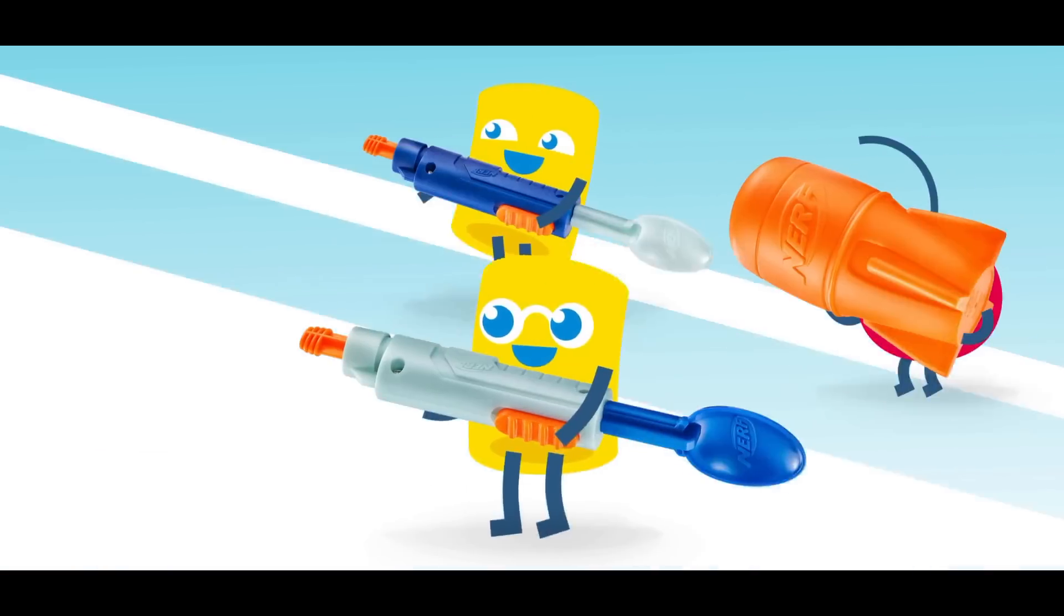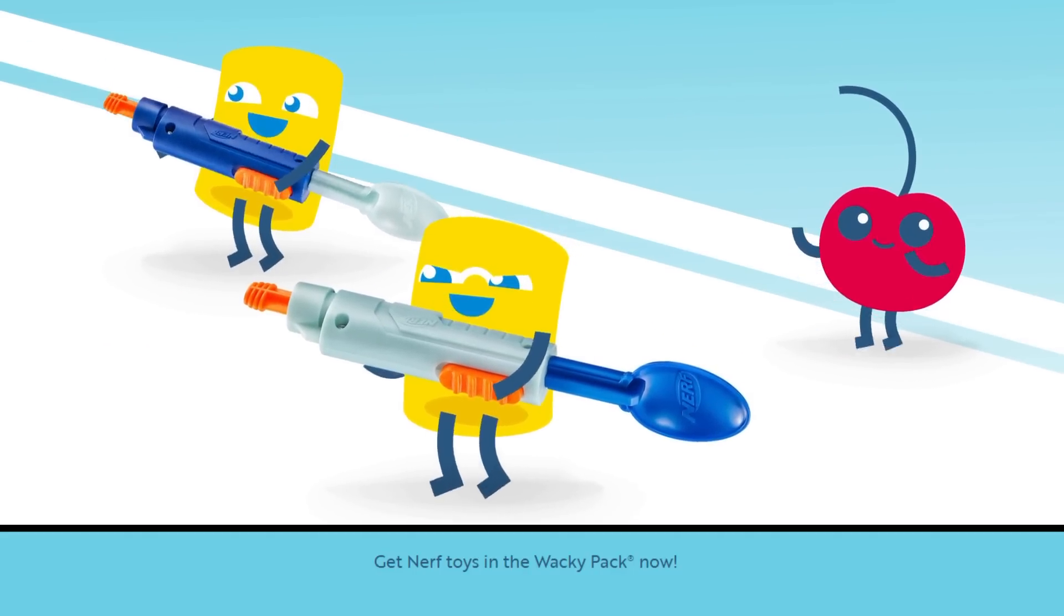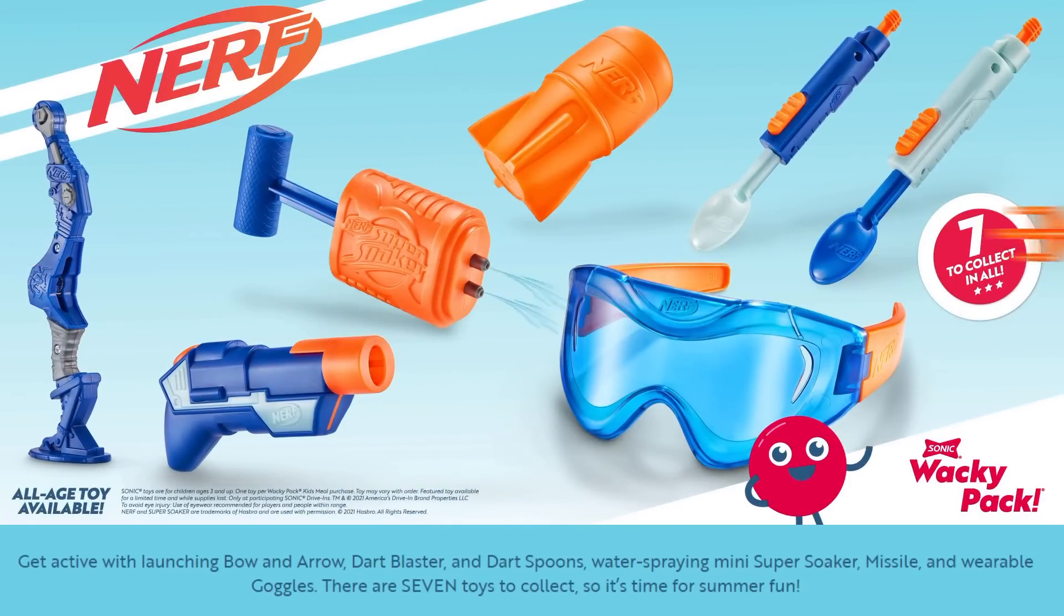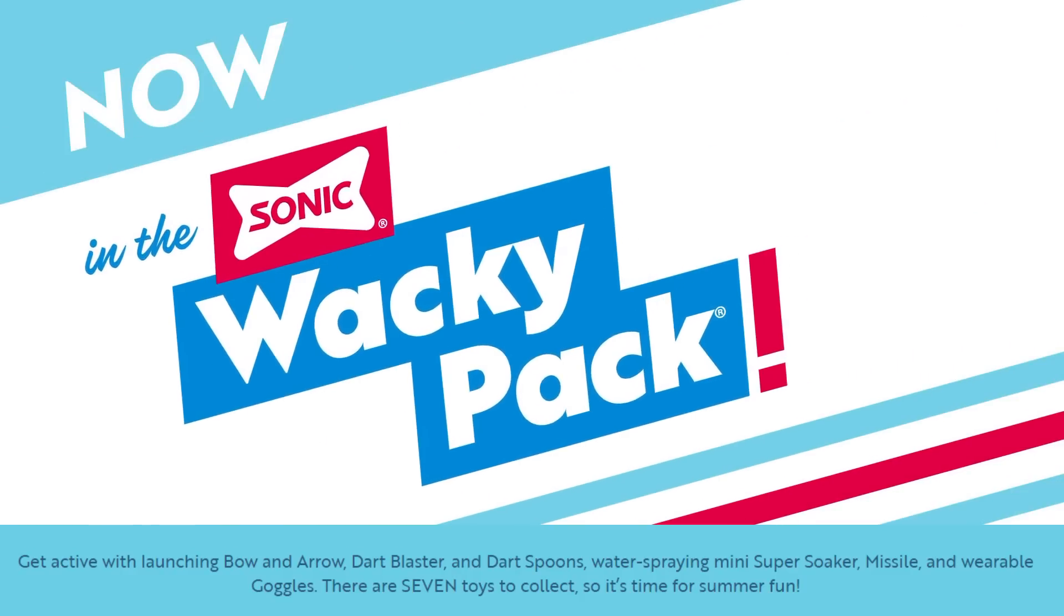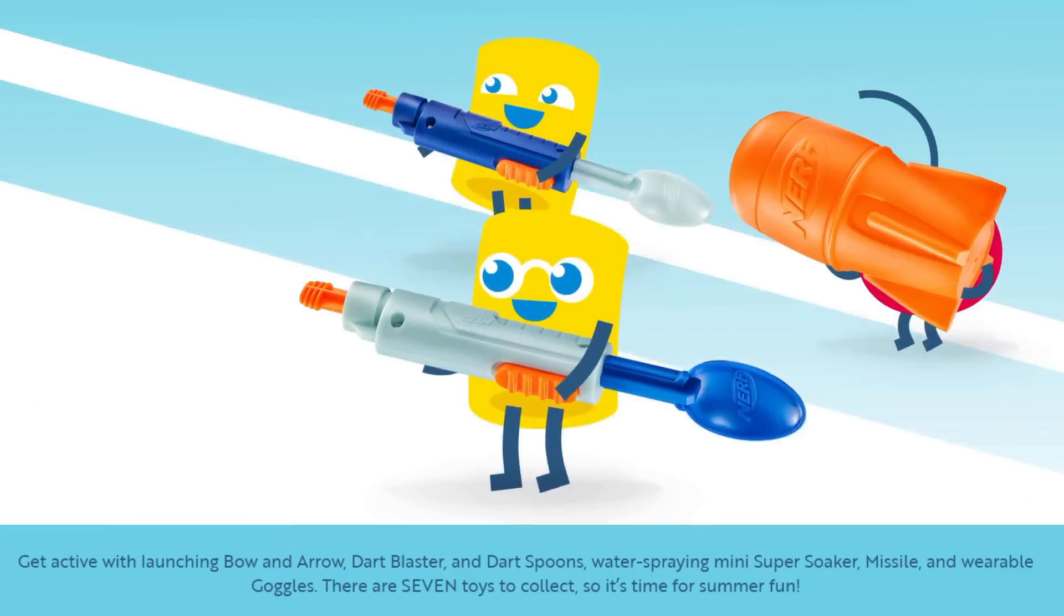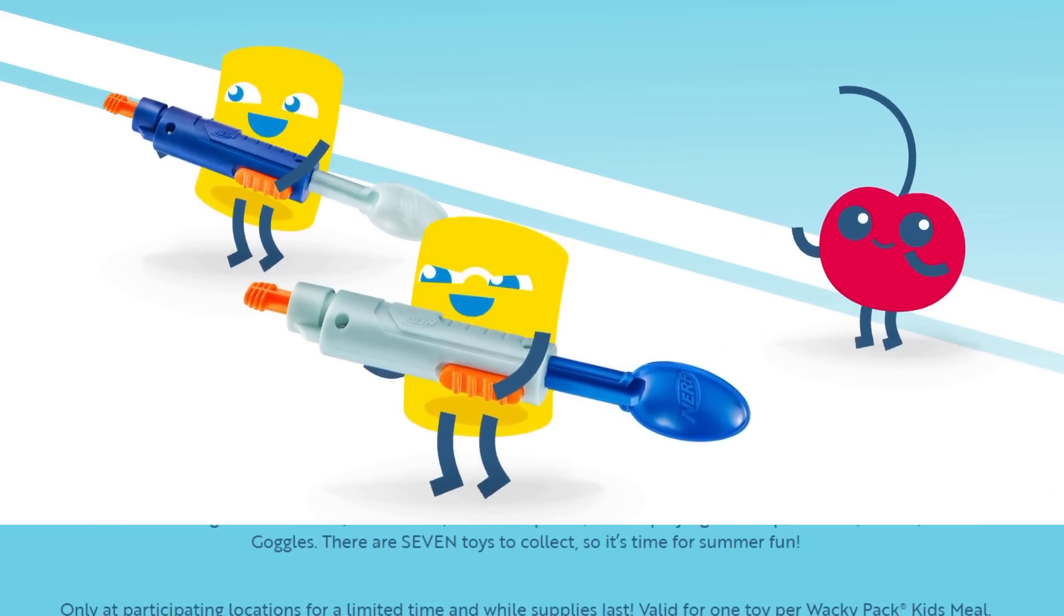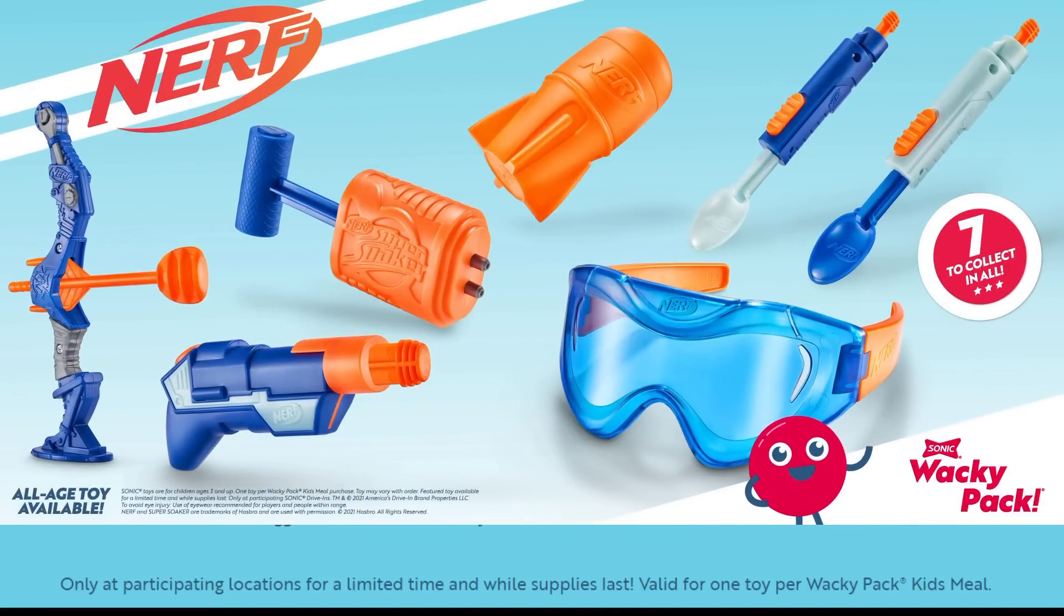They're similar to McDonald's Happy Meals in that they come with toys. And today, of course, get Nerf toys in the Wacky Pack now. We have some new Nerf options. Get active with launching bow and arrow, dart blaster, and dart spoons, water spraying mini super soaker, missile, and wearable goggles. There are seven toys to collect, so it's time for summer fun. Only at participating locations for a limited time. While supplies last. Valid for one toy per Wacky Pack Kids Meal.